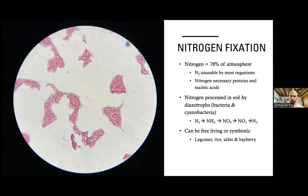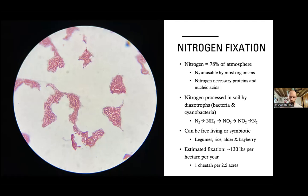Legumes — like peanuts, beans, and alfalfa — make up about a third of flowering plant species (angiosperms) and have evolved a symbiotic relationship with nitrogen-fixing bacteria, giving them an advantage in obtaining nitrogen. Rice, alder, and bayberry also have similar symbiotic relationships. Estimated nitrogen fixation is about 130 pounds per hectare (roughly 2.5 acres). While it may not seem like a lot, with ongoing nutrient cycling the more you put in, the more fertile the soil becomes over time.